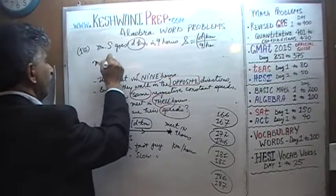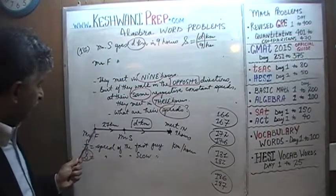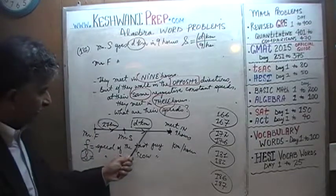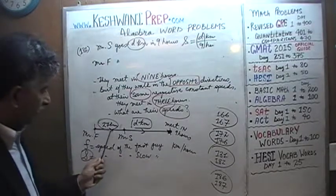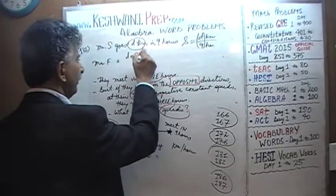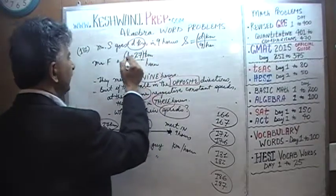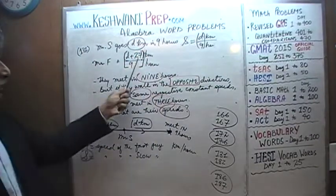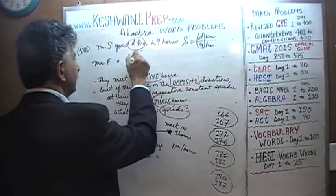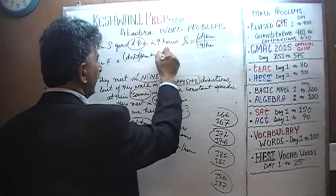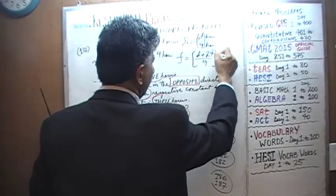Similarly, Mr. F — the fast guy — was 27 kilometers behind Mr. S. So he has to first travel those 27 kilometers plus an additional D kilometers. Mr. F goes D plus 27 kilometers in nine hours. So his speed is (D + 27) over 9 kilometers per hour.